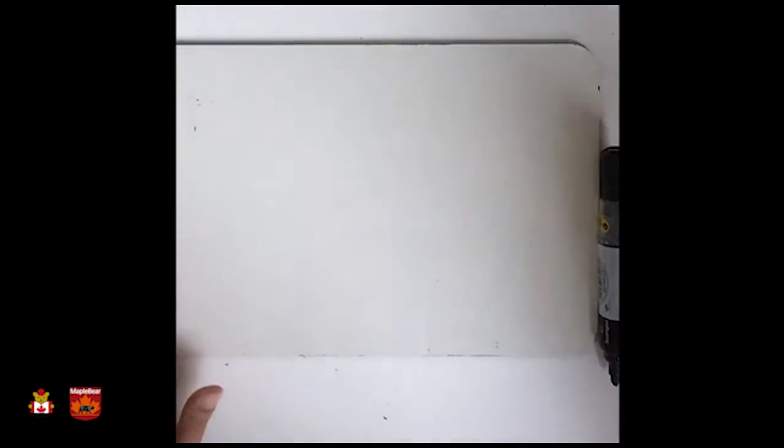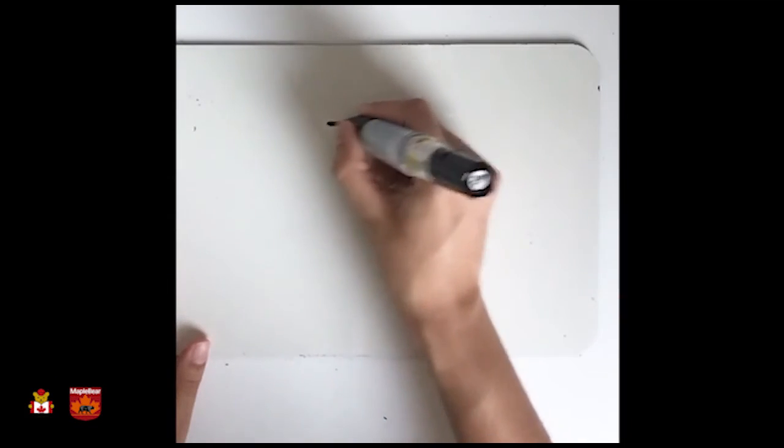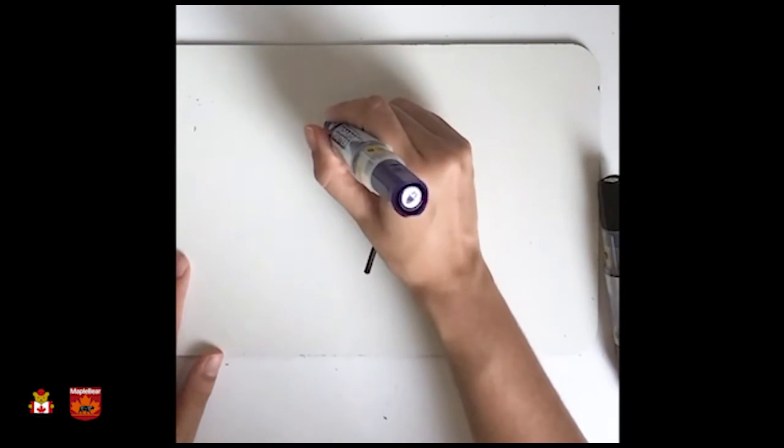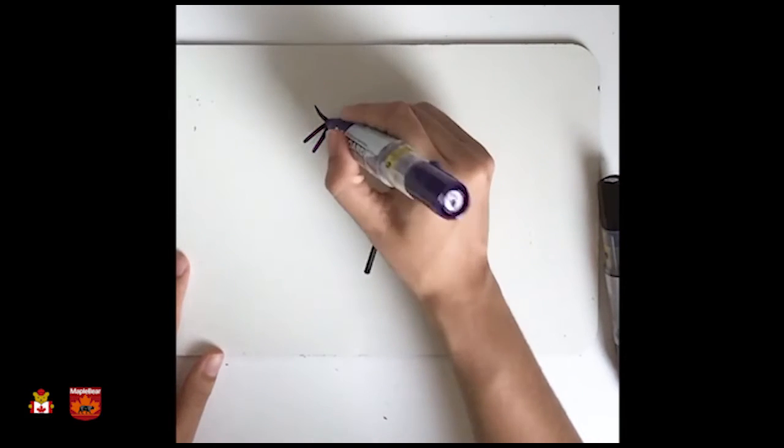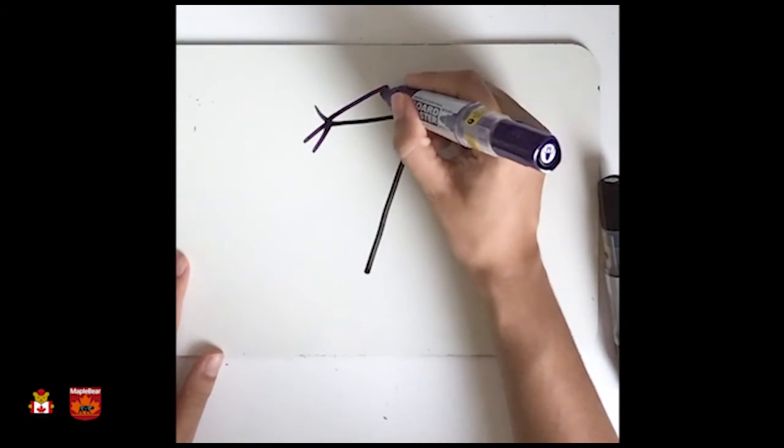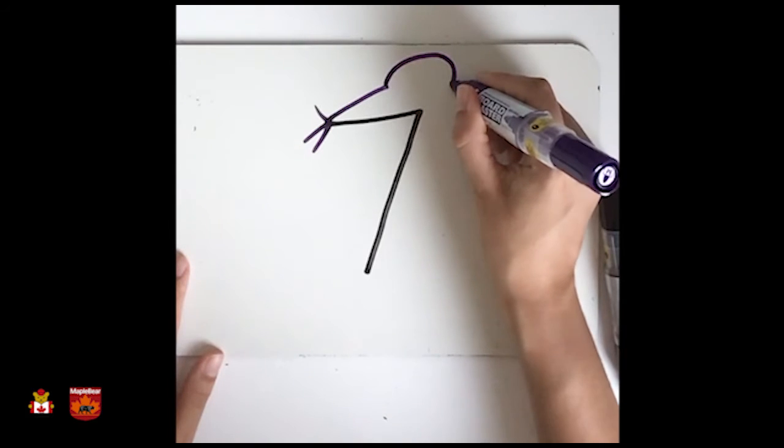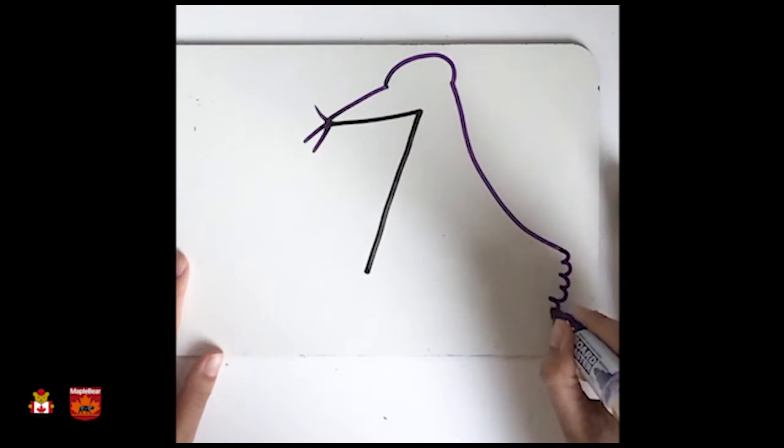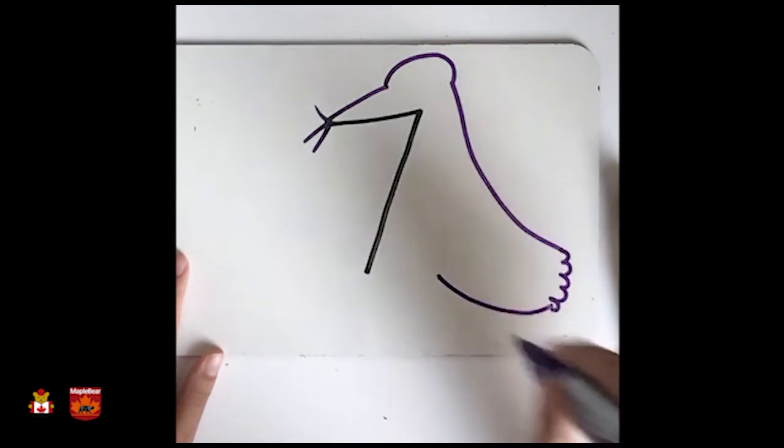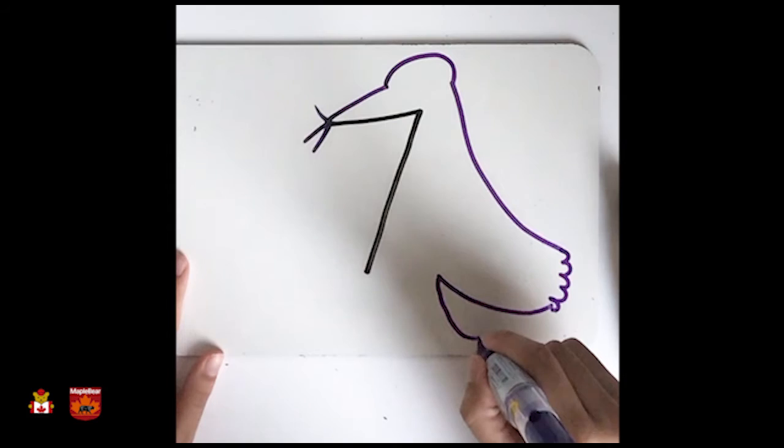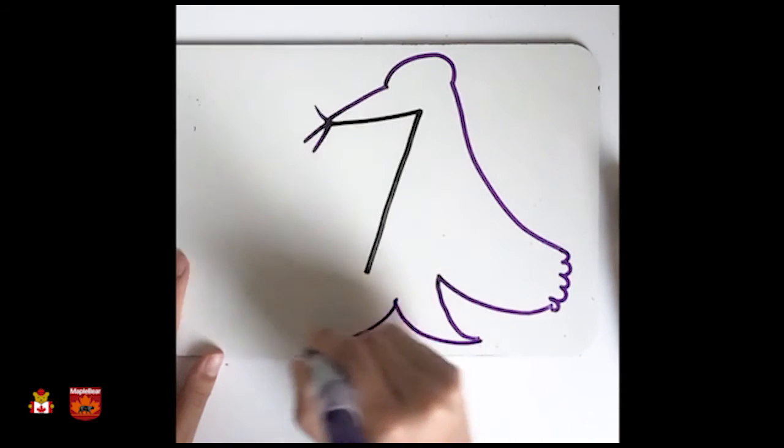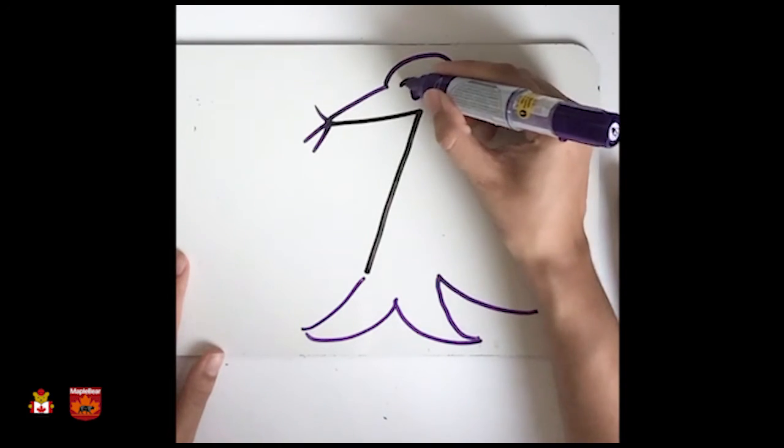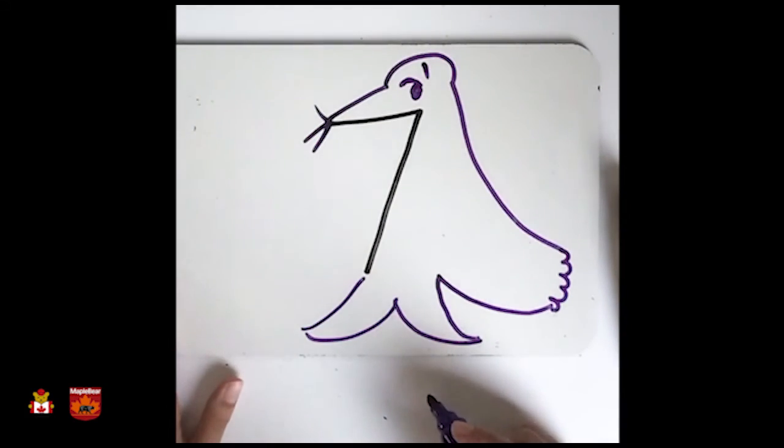Now, I'm going to do number seven. Oh, then you get, do it like this. Like this. Trace like this. And then, it's only missing the eye. So, this is a seal.